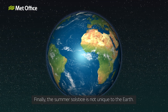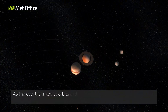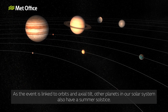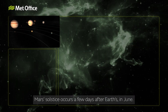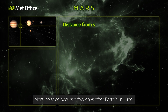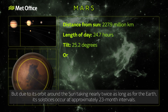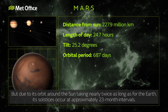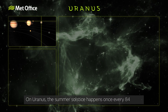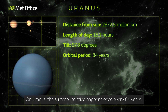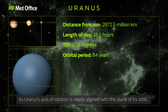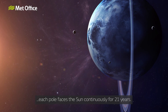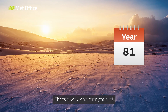Finally, the summer solstice is not unique to the Earth. As the event is linked to orbits and axial tilt, other planets in our solar system also have a summer solstice. Mars's solstice occurs a few days after Earth's, in June, but due to its orbit around the Sun taking nearly twice as long as Earth's, its solstices occur at approximately 23-month intervals. On Uranus, the summer solstice happens once every 84 years. As Uranus's axis of rotation is nearly aligned with the plane of its orbit, each pole faces the Sun continuously for 21 years — that's a very long midnight Sun.